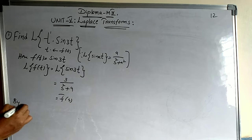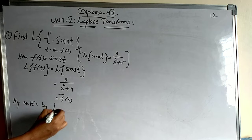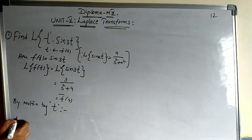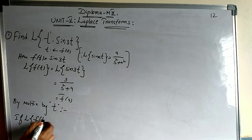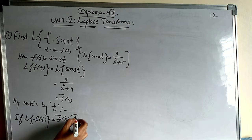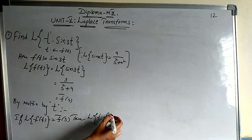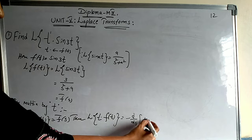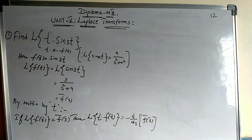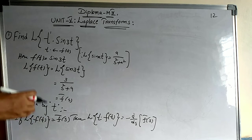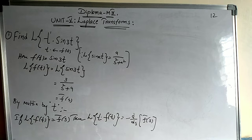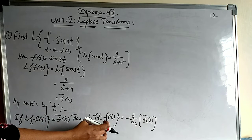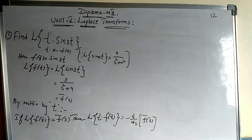Now apply the multiplication by t property. You must write the statement: if Laplace of f(t) = F̄(s), then Laplace of t · f(t) = -d/ds · F̄(s). Therefore, Laplace of t · sin 3t equals -d/ds of F̄(s), where F̄(s) = 3/(s² + 9). So this equals -d/ds of [3/(s² + 9)]. Taking 3 as constant outside: -3 · d/ds [1/(s² + 9)].